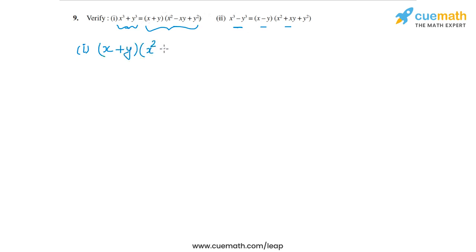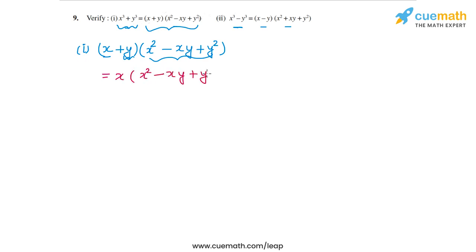Let's start with the first part. On the right-hand side we have (x + y)(x² - xy + y²). First we multiply x with this term, and then we multiply y with the second term. We are basically using the distributive property of multiplication over addition. So this will be x(x² - xy + y²) plus y(x² - xy + y²).